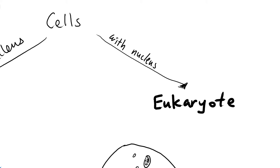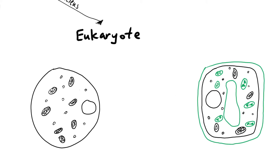On the other hand, we have cells that do have a nucleus, called eukaryotic cells or eukaryotes. The two major common examples are animal and plant cells, but be aware that other organisms such as fungi and protists are also eukaryotic. For this section, we'll focus on the cell structure of animal and plant cells.